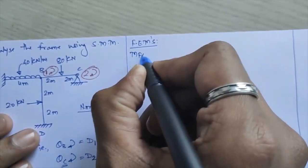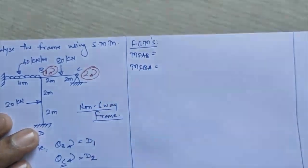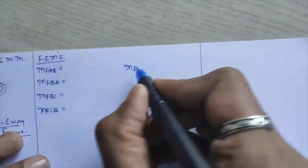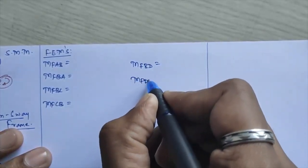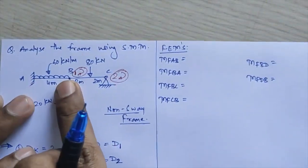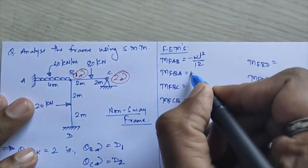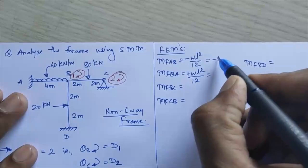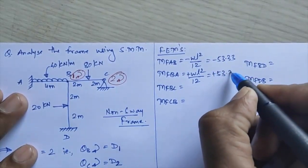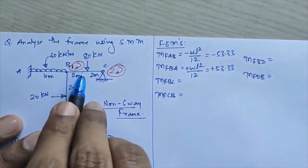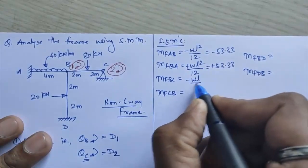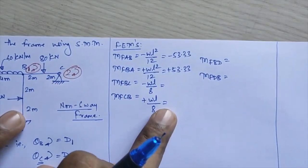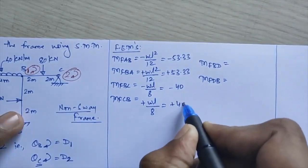Now we calculate the fixed end moments: MF_AB = −WL²/12 = −40×4²/12 = −53.33 kNm, and MF_BA = +53.33 kNm. For BC and CB, a central point load gives MF_BC = −WL/8 = −80×4/8 = −40 kNm, and MF_CB = +40 kNm.